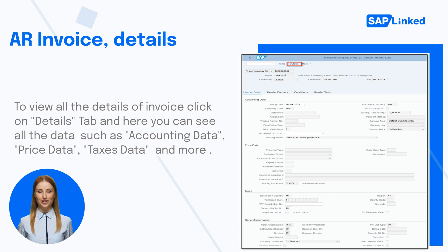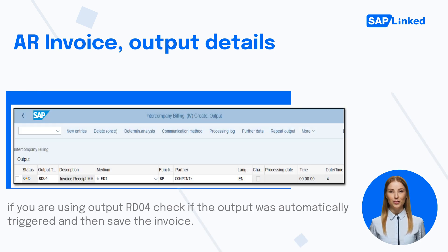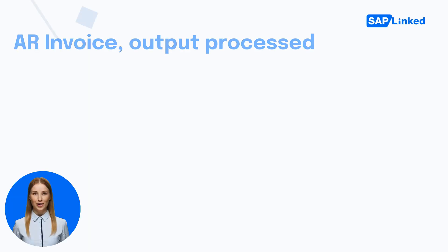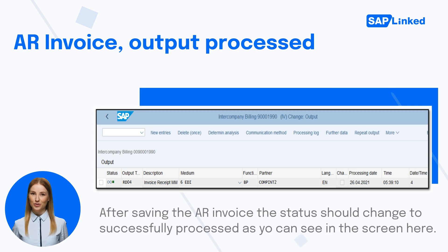If you are using output RD04, check if the output was automatically triggered by clicking the Output button. The status of output RD04 will show as not processed initially. After saving the AR invoice, the status should change to Successfully Processed. To check the output, enter transaction VF02 and then go to Output Header. The status of output RD04 is now processed, as you can see on the screen.